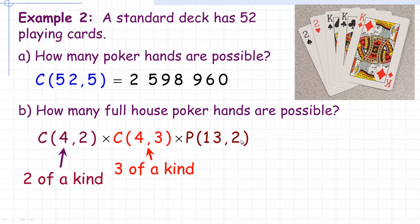This next part is a permutation because there are 13 different denominations, and we're selecting two of them — one for the pair and one for the three of a kind. The reason this is a permutation is because choosing twos as the pair and kings as the three of a kind is a different hand from choosing twos as the three of a kind and kings as the pair. So there's 13 permute 2 ways, which is the same as 13 times 12, to select the two denominations.